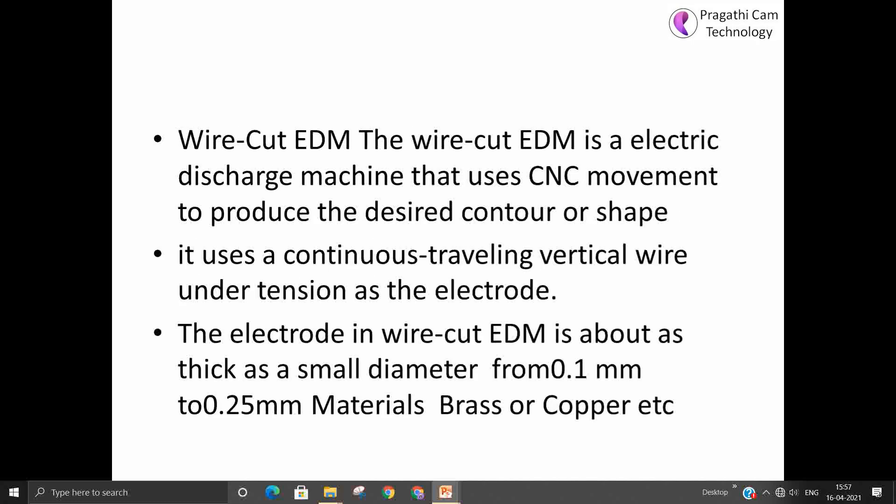The wire cut EDM is an electric discharge machine that uses CNC movement to produce the desired contour or shape. It uses a continuously traveling vertical wire under tension as an electrode. The electrode in wire cut EDM is about thickness of a smaller diameter of 0.1 mm to 0.25 mm. The metal is generally brass or copper.